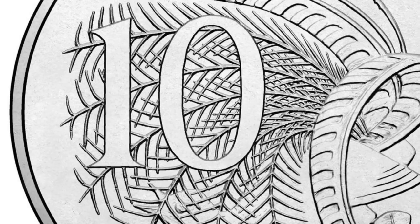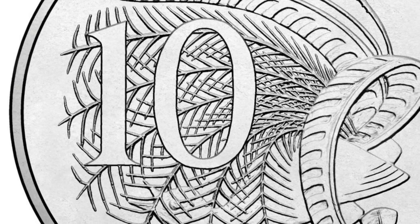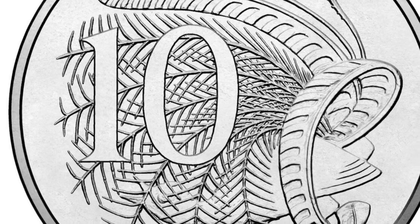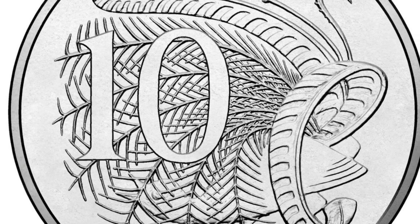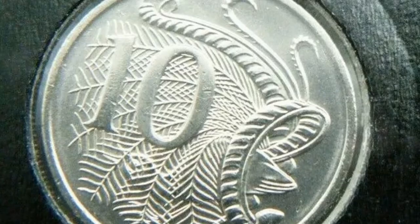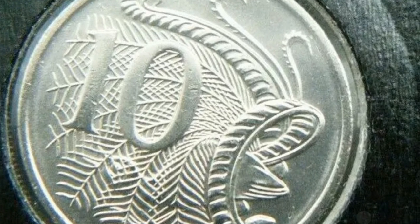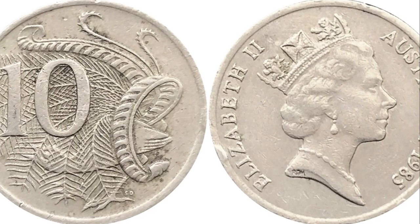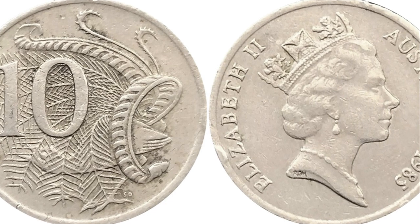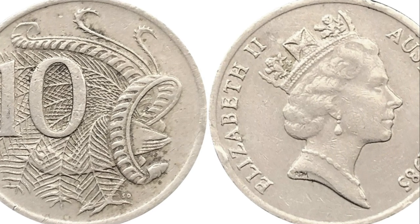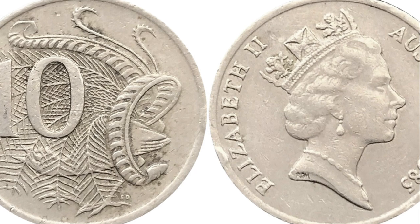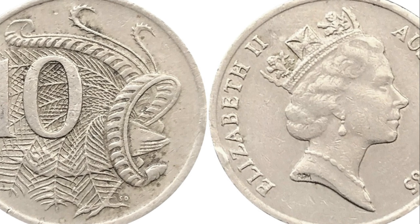the 10 cent coin has been a familiar sight in Australian wallets and cash registers for decades. On the coin's obverse you'll find the effigy of Queen Elizabeth II, which has been a constant feature since its first issue. This design, created by Arnold Machin, reflects Australia's historical ties to the British monarchy.